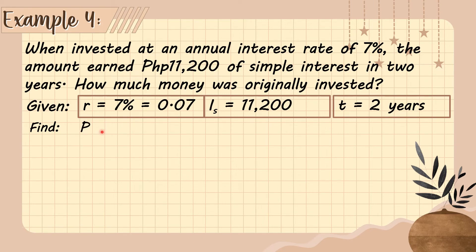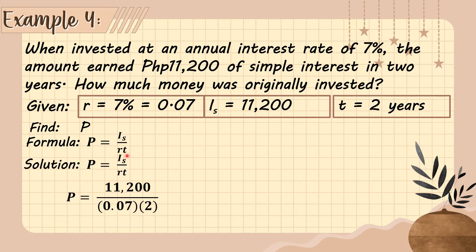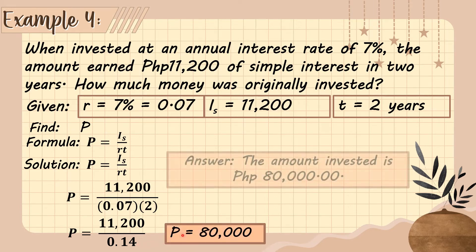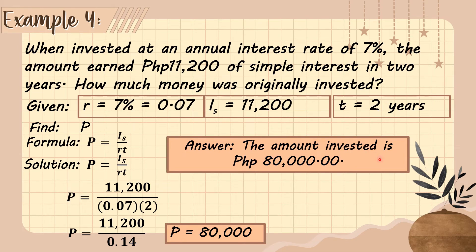The formula is P = I_s ÷ (r × t). Substituting: 11,200 ÷ (0.07 × 2) = 11,200 ÷ 0.14 = 80,000 pesos. So the amount originally invested is 80,000 pesos.